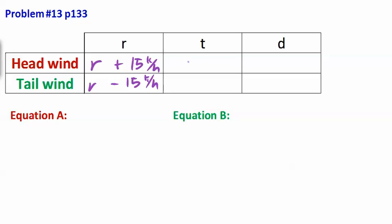The time in the headwind is 2 hours and 1 third, 2 and 1 third hours. And the return trip was 1 hour and 2 fifths. And then the distance was equal, so we'll just say x.